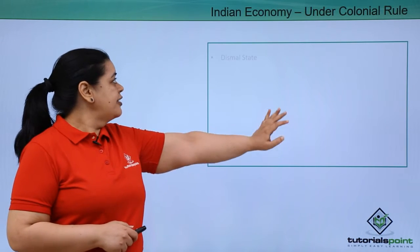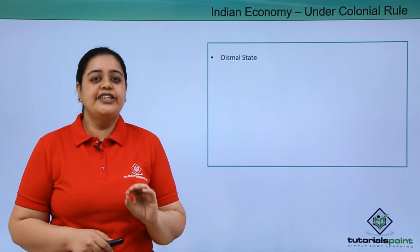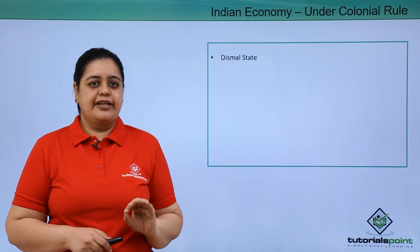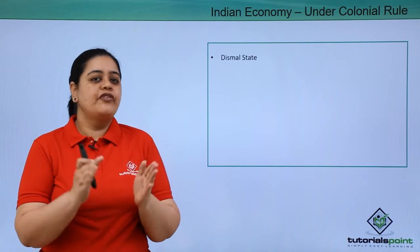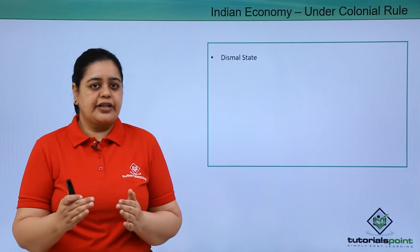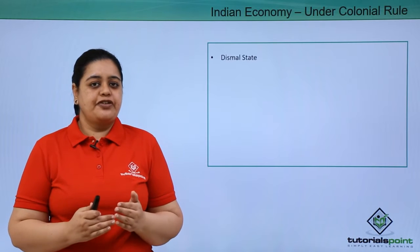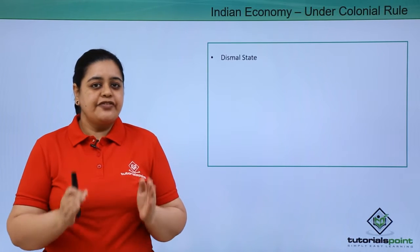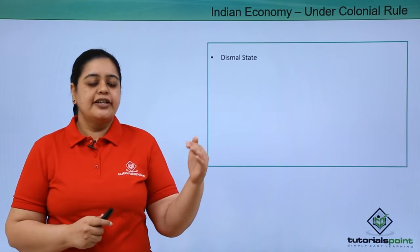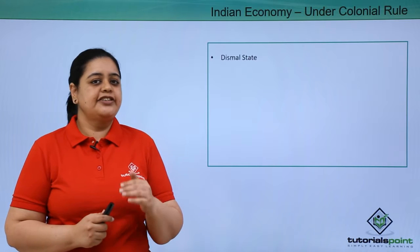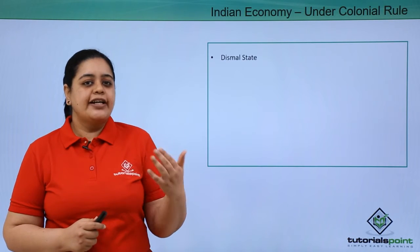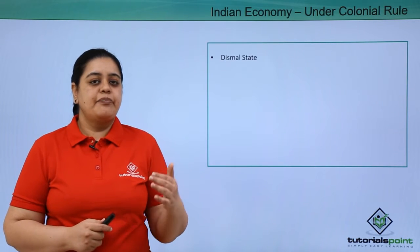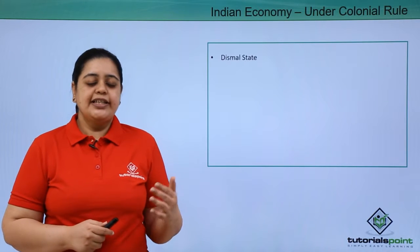Under colonial rule, the state of the economy was in a dismal state. We were not growing — the GDP of the country was not growing. The state of agriculture, industry, and the service sector was very bad. We had mass-scale unemployment, poverty, and inequality.